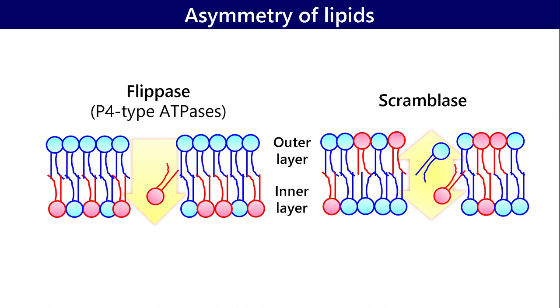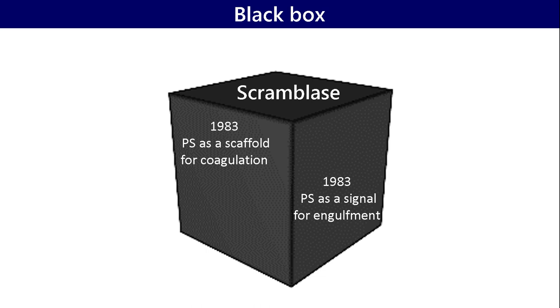PS is normally kept on the inner side of the membrane using energy by FLIPPASE, an ATP-dependent protein. When cells are activated, scramblers — which transport lipids bidirectionally and non-specifically — need to be activated. Although the existence of scramblers was suggested about decades ago, around the 1980s, no one had identified them.